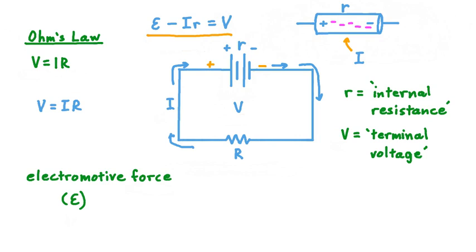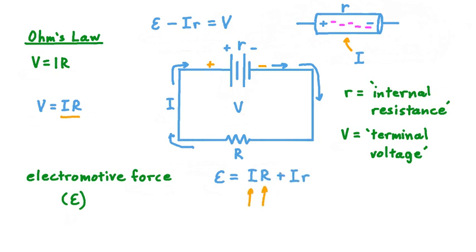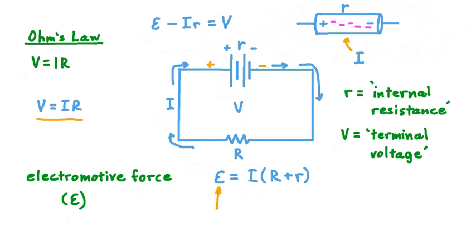Considering this equation for electromotive force along with Ohm's law applied to the rest of the circuit, we can write: EMF equals capital V plus I times r. Since capital V equals I times capital R, we can substitute to get EMF equals I·R plus I·r, which groups to EMF equals I times the quantity (R plus r). This looks just like Ohm's law — a potential difference equals current times total resistance — but now we're accounting for the internal resistance of our battery as well.